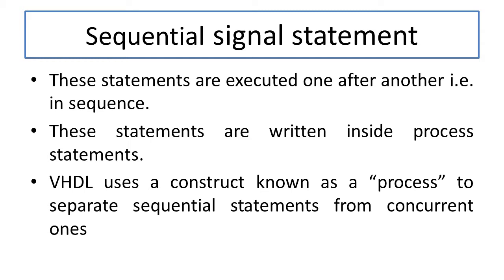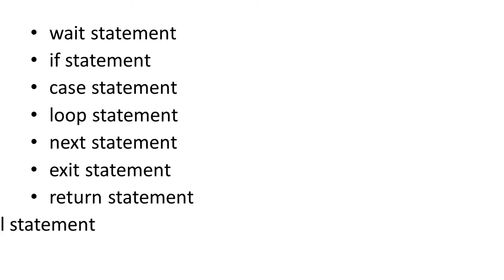Let us look at the different types of sequential statements. We have: wait statement, if statement, case statement, loop, next, exit statement, return, and null statement. In VHDL, we mostly use if statement, case, loop, and exit statement — or even the wait statement in certain cases.